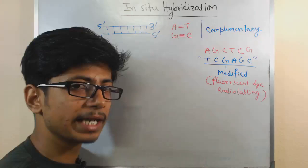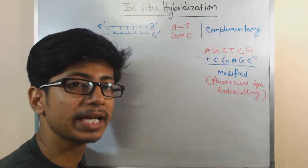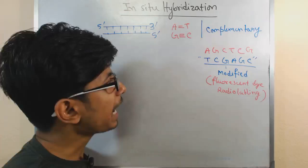Then we add this modified probe which is tagged with radio label isotope or fluorescent dye, whatever according to our convenience, and then we allow them to be hybridized properly. Once they hybridized properly, what we can tell after that...